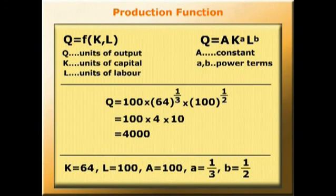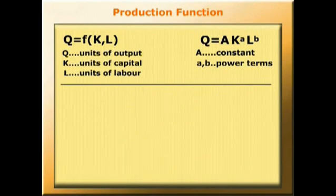So 100 units of labour plus 100 units of capital per period yields the firm 4000 units of output per period. Now let's explore what happens if we change the volume of inputs. Suppose we double inputs — what happens to output?